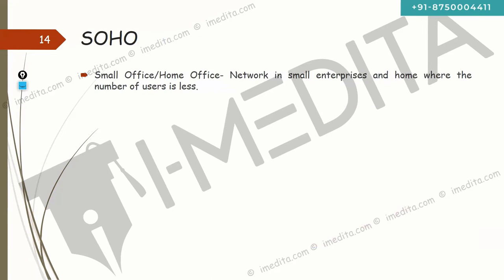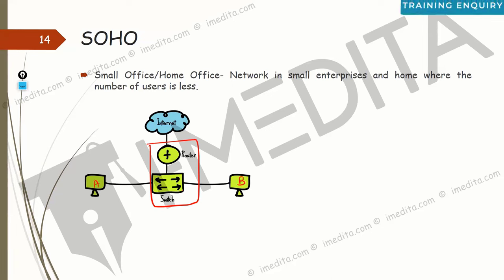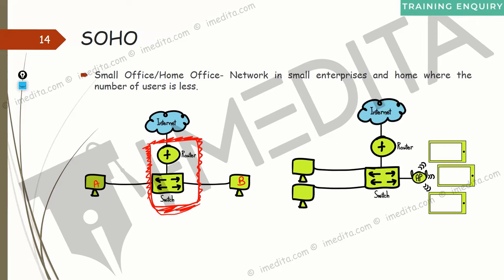Finally, SOHO — small office/home office network — is what you use at your home. For example, in a home you might have a router and a switch connecting all devices. Sometimes this combined functionality is available in a single device, so you don't need to buy two separate boxes. These days most people use Wi-Fi, so the router and wireless access point are typically combined.